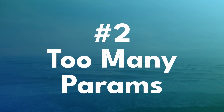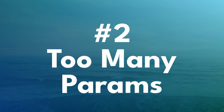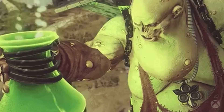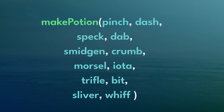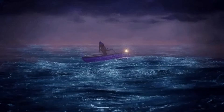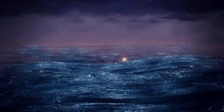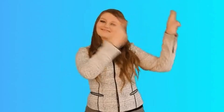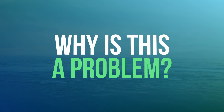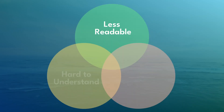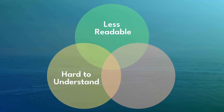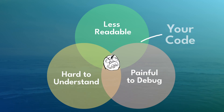You come across a function with a parameter list that looks like the ingredients for a potion in a fantasy novel — a pinch of this, a dash of that, and before you know it you're lost in a sea of parameters. So why is this a problem? Long parameter lists can make your code less readable, harder to understand, and debugging becomes a real headache.